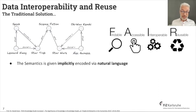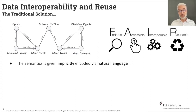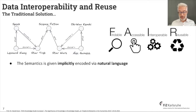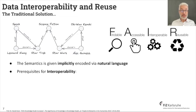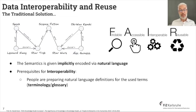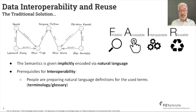What we want to enable nowadays is that all data we use should be FAIR — you have surely heard of these famous FAIR principles: data has to be Findable, Accessible, Interoperable, and Reusable. However, the semantics — the meaning of your labels — is implicitly encoded by natural language. To enable interoperability, people must prepare natural language definitions for the terms used, defining a terminology and creating a glossary so that everybody knows what each label really means.